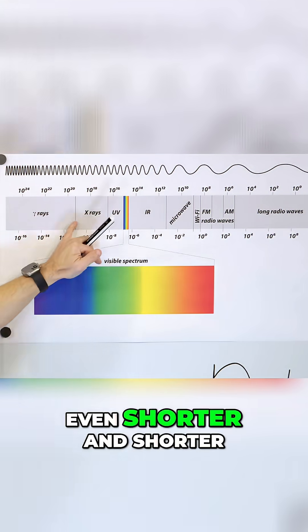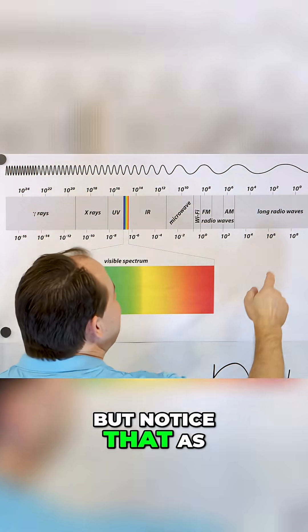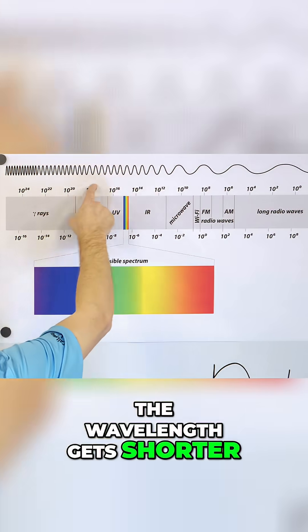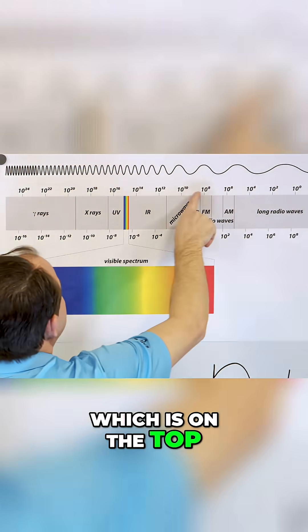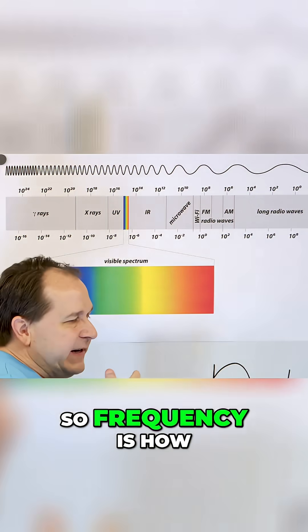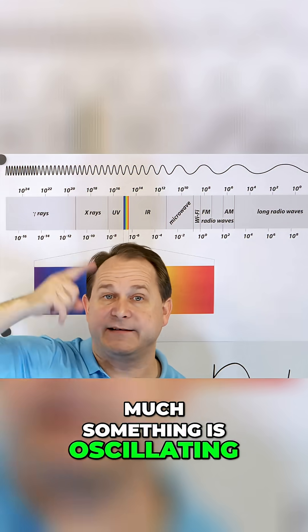And then we have even shorter and shorter. But notice that as the wavelength gets shorter, because the wave is actually getting shorter, then the frequency, which is on the top, is getting bigger. So frequency is how much something is oscillating.